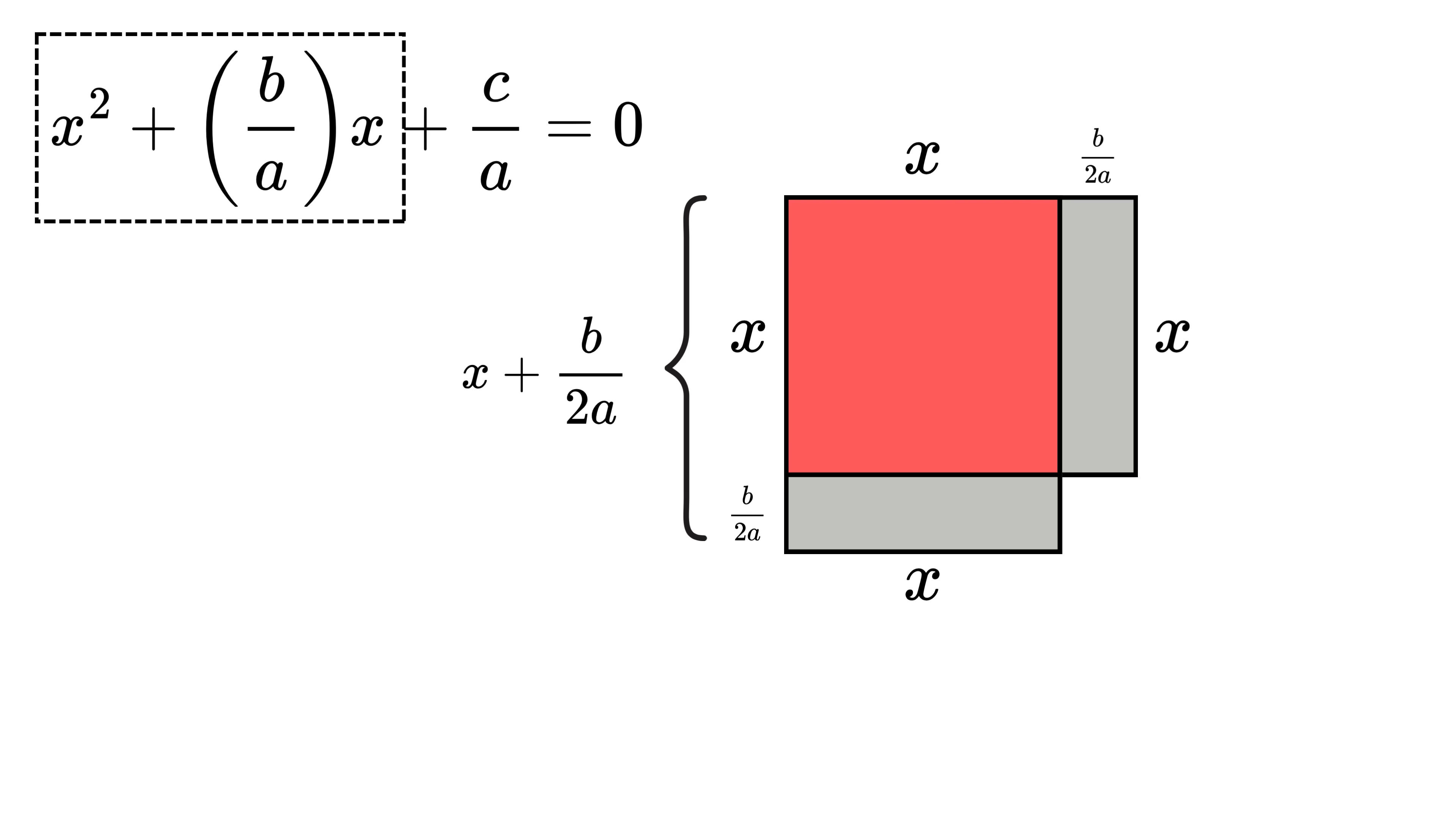But to actually make it a complete square, we still need to add one small corner square which has a side length of b/2a, and thus its area will be (b/2a)².